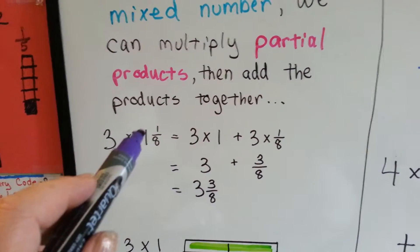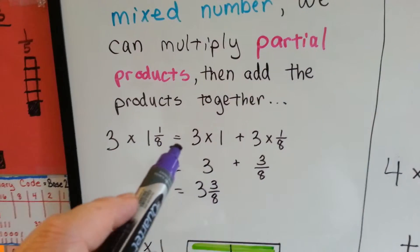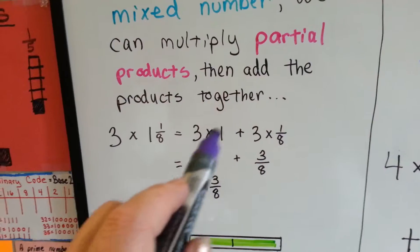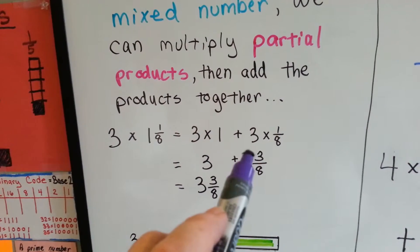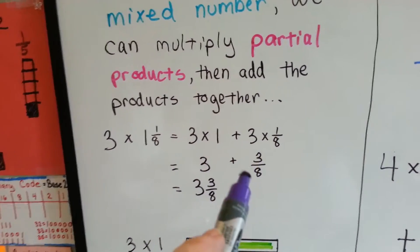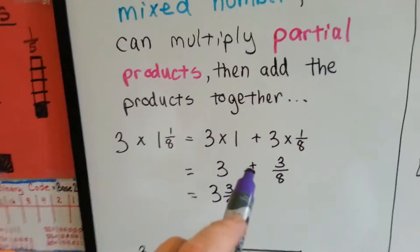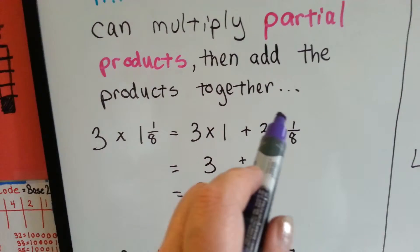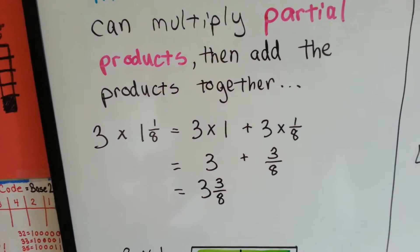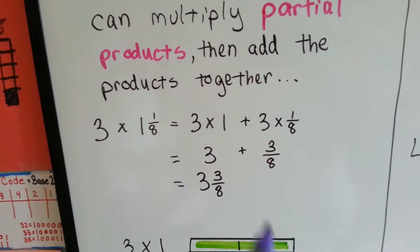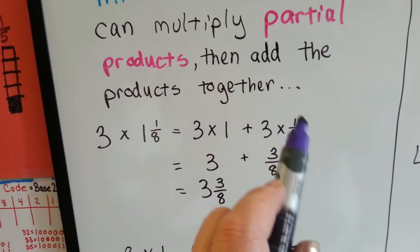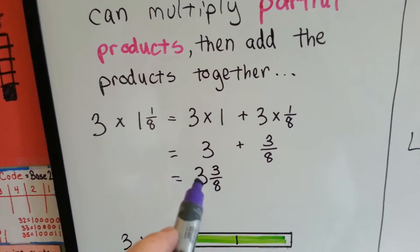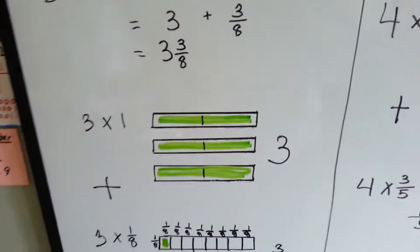We've got 3 times 1 and 1 eighth, and it becomes 3 times 1, plus 3 times 1 eighth. We multiply 3 times 1 to get 3, then multiply 3 times 1 eighth. We multiply the whole number to the numerator and put it over the denominator, so 3 times 1 eighth becomes 3 over 8.